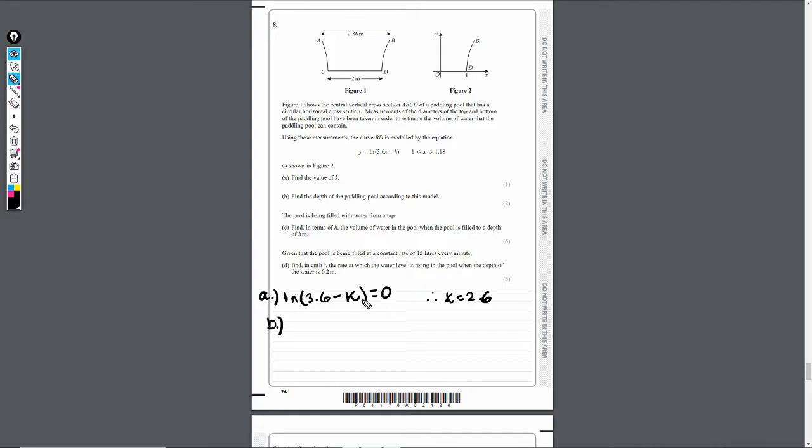So all I've got to do is sub 1.18 into my equation. My new equation, don't forget, will be y equals ln(3.6x), and where the k was, remember, we've got a value now, 2.6. So minus 2.6. And we want to know what happens when x is 1.18. Therefore, y equals ln(3.6 × 1.18 - 2.6). What does this give us? You'll get 0.4995 meters. That's the depth of the paddling pool according to the model using this equation for curve BD. That's part A and B done for the first three marks.